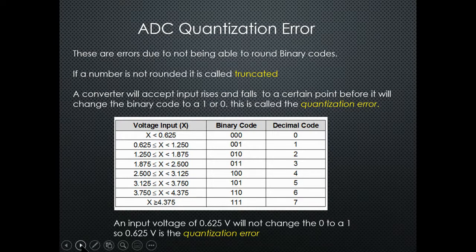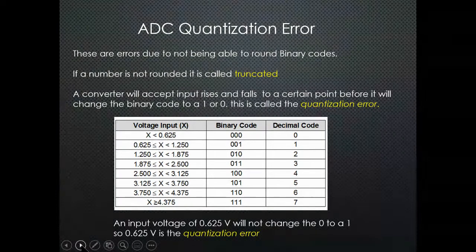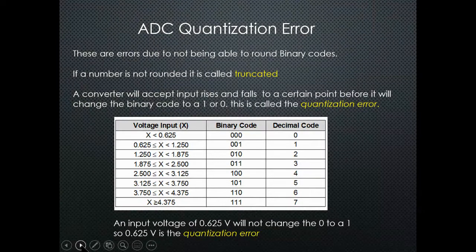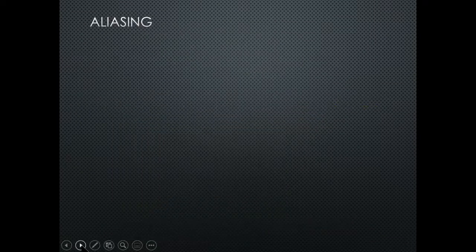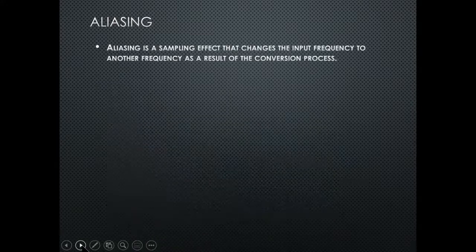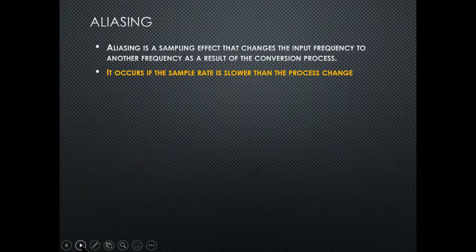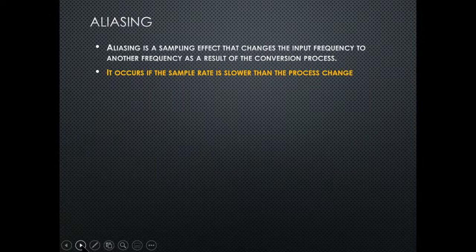An input voltage of 0.65 volts will not change to a one — 0.625 volts is the quantization error. Aliasing is a sampling effect that changes the input frequency to another frequency as a result of the conversion process. It occurs when the sample rate is slower than the process change — if the signal from the transmitter changes faster than you're scanning, you miss some of those analog signals.